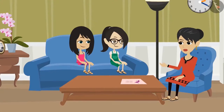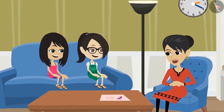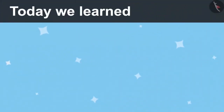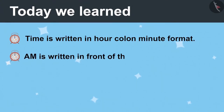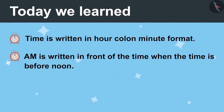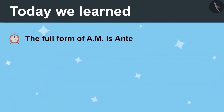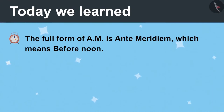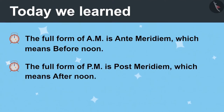Now you have learned to read and write time. Today we learned that time is written in the form of hour colon minute. AM is written in front of the time when the time is before noon. PM is written in front of the time when the time is after noon. The full form of AM is ante meridiem, which means before noon. And the full form of PM is post meridiem, which means afternoon.